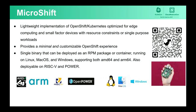MicroShift is a lightweight implementation of OpenShift and Kubernetes, optimized for edge computing use cases with small-factor devices and resource constraints, or for environments serving single-purpose workloads. It provides a minimal yet customizable OpenShift experience. On boot, it starts with only minimal OpenShift components, but you can add more and customize with ease. It is a single binary with both data and control plane, deployable either as RPM or as a container. It runs on Linux, macOS, or Windows, and currently supports AMD64 and ARM64, with the community having already developed binaries for RISC-V and power systems.